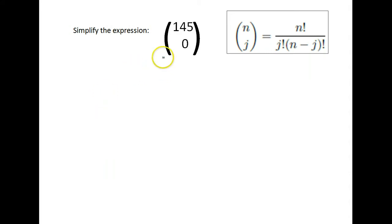The key on this problem is to remember that zero factorial is not zero. It is, in fact, one. So when we set this one up, if we were to do the way we're supposed to, on top we do 145 factorial over, our bottom number is zero, so zero factorial, and then times the two subtracted, so 145 minus zero factorial.